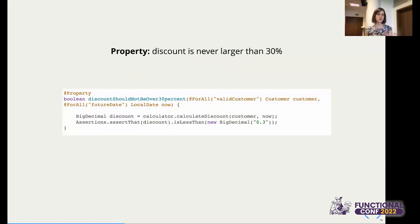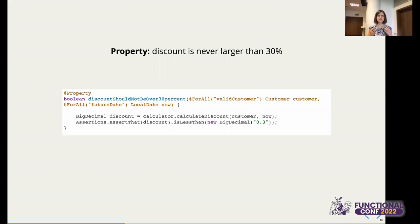Let's go to the code example. We are writing the property that the discount is never larger than 30%. The body of the test is straightforward: we calculate the discount and assert it's less than or equal to 30%. At the top we have the @Property annotation. But all the magic is in the @ForAll annotation — here we tell jqwik: please generate a thousand valid pairs of customers and current dates, and verify that this property is true for every set of data you randomly prepare.